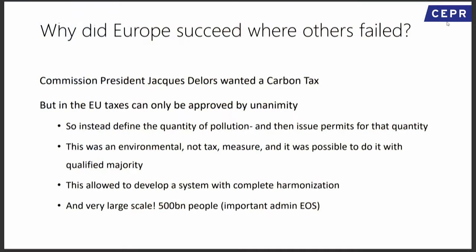Jacques Delors, the president of the Commission responsible for the monetary union and the single market, wanted a carbon tax. The problem with taxes is that the EU, in spite of our illusions, works like an international organization — the taxing is done by member states and requires unanimity. So Delors found it impossible. The proposal was to instead adopt what economists had been defending: an emission trading scheme. This is environmental legislation, not taxing, so it can pass by qualified majority. And crucially, so can the CBAM.